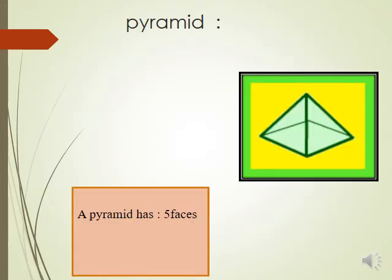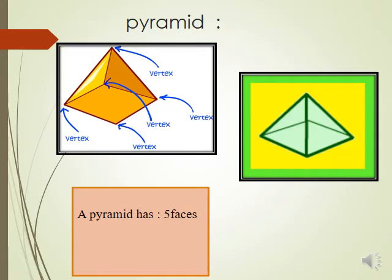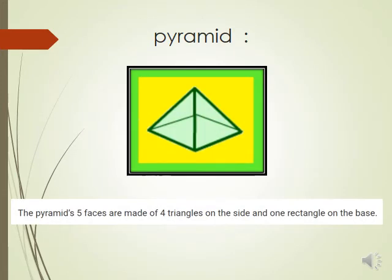The pyramid has five faces, five vertices, and eight edges. The pyramid's four side faces are made of four triangles, and there is one rectangle on the base.